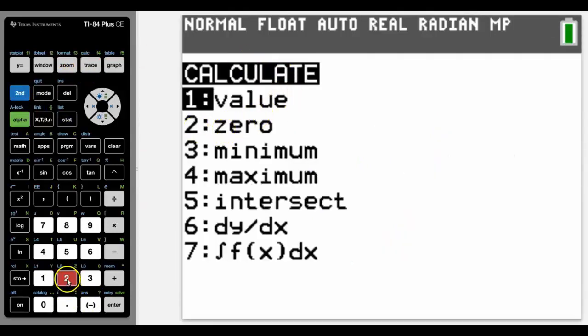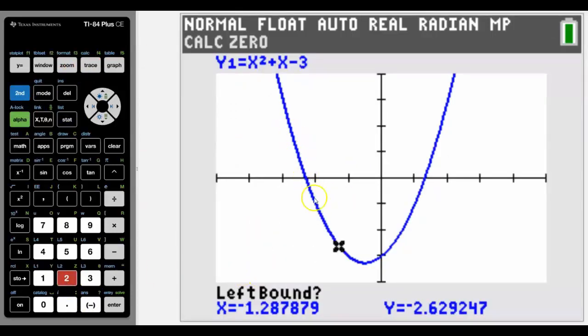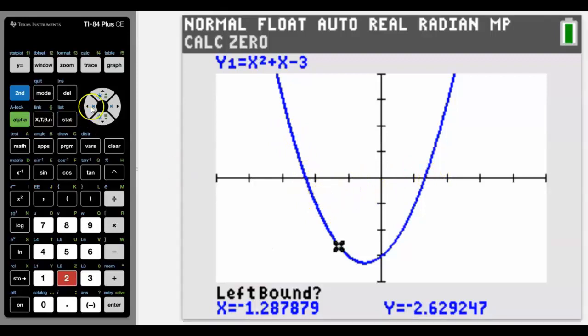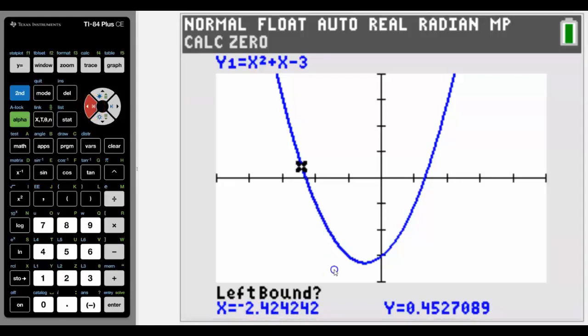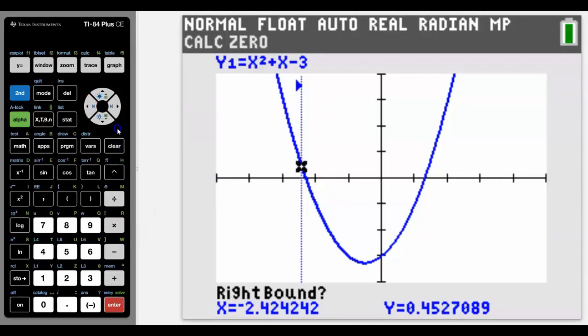Secondly we're going to look at zero, and we know that the zeros are where the curve crosses the x axis. There's two ways to do that. One is just to move the cursor until you get to the left of where it crosses. So we can see that's the left of where this curve crosses the x axis. Press enter.